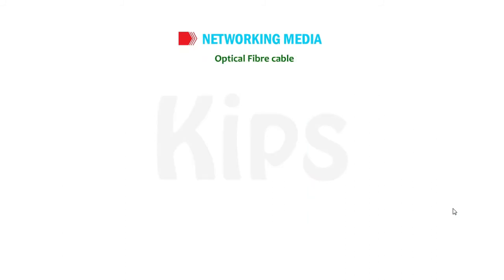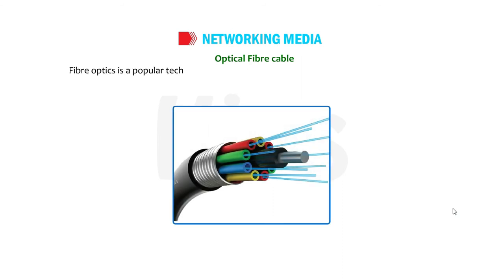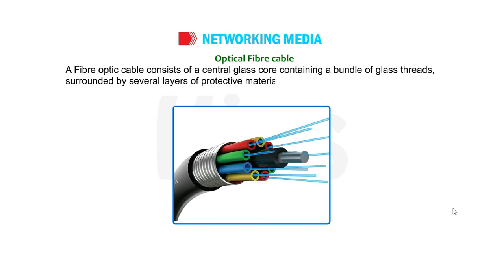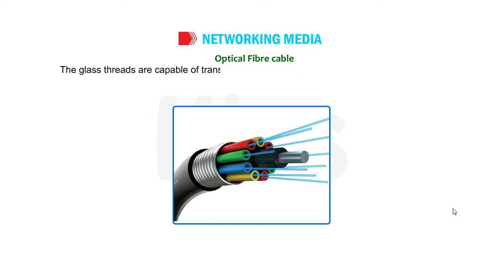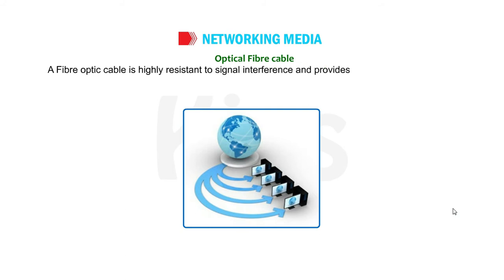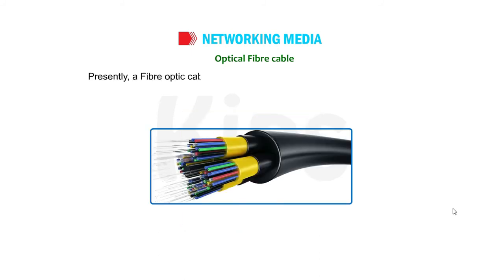Optical Fibre Cable. Fibre optics is a popular technology that has a larger capacity to transfer data at a very high speed. A fibre optic cable consists of a central glass core containing a bundle of glass threads surrounded by several layers of protective materials. The glass threads are capable of transmitting data converted into light signals at extremely high speed. A fibre optic cable is highly resistant to signal interference and provides better data transmission by providing high bandwidth. Presently, a fibre optic cable is a popular technology for local area networks.